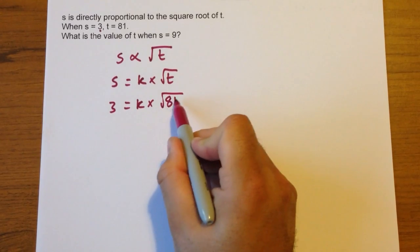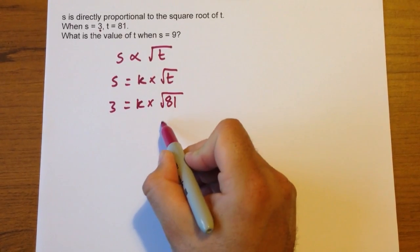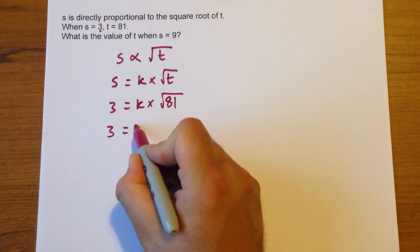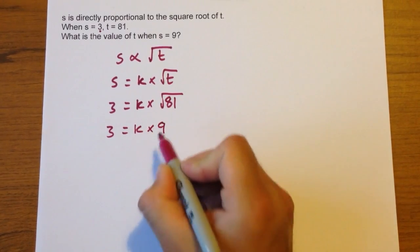We should know that the square root of 81 is 9, because 9 times 9 gives us 81. So 3 equals k multiplied by 9.